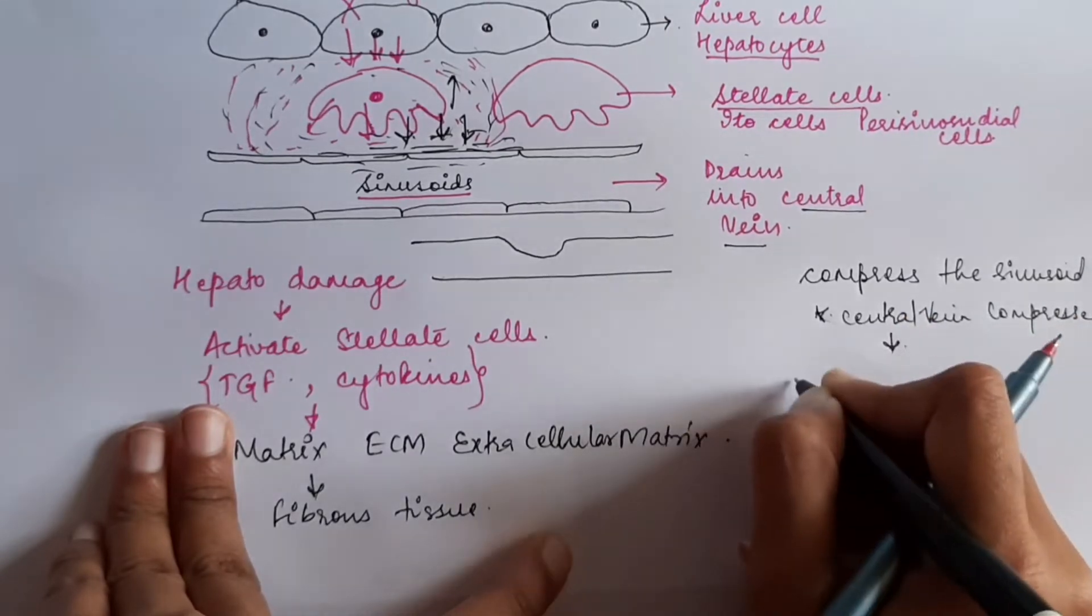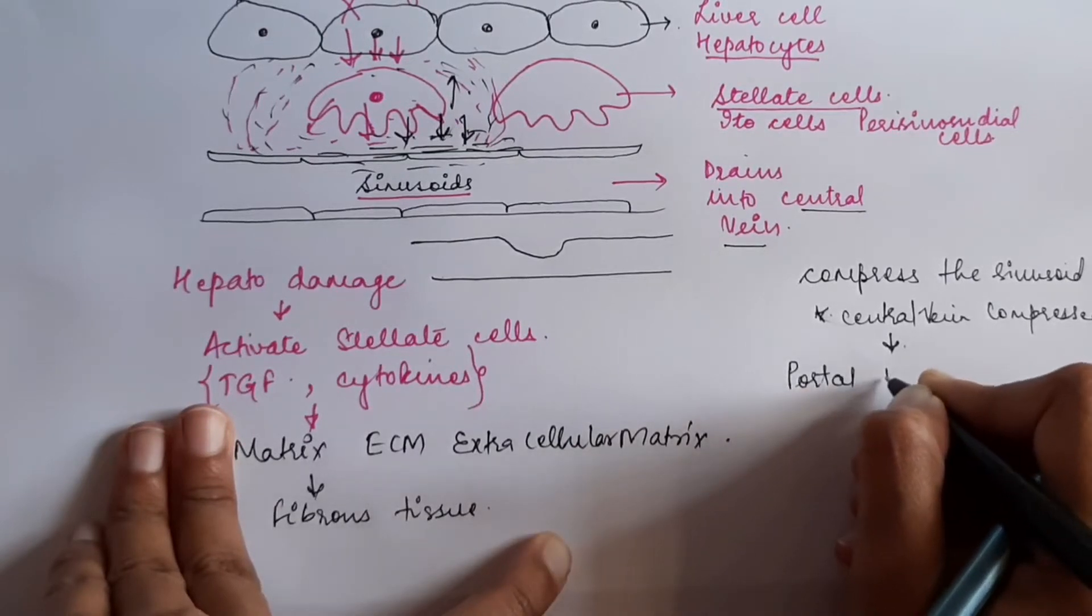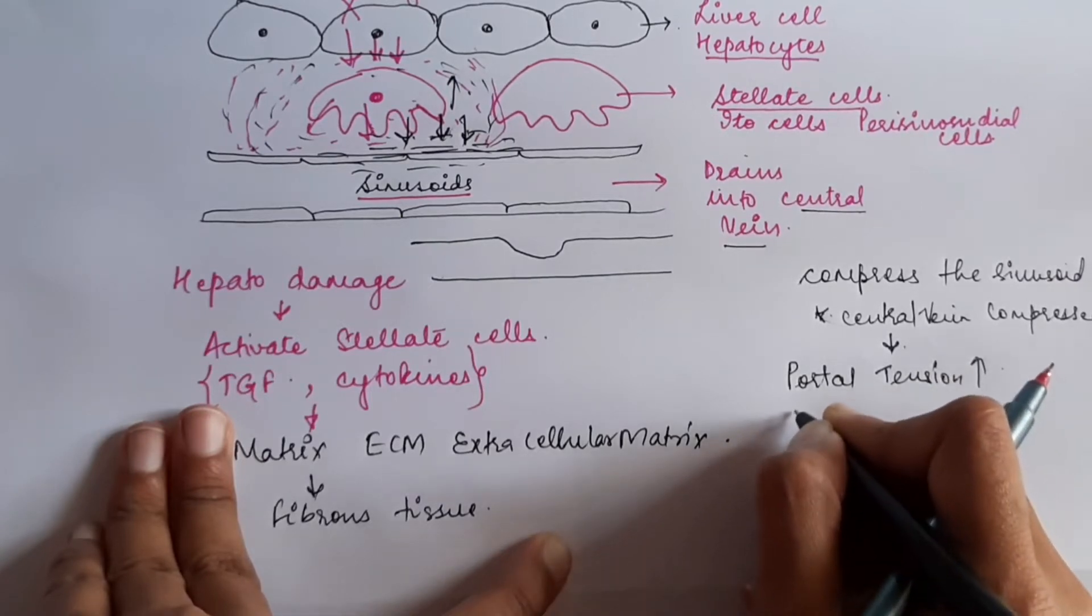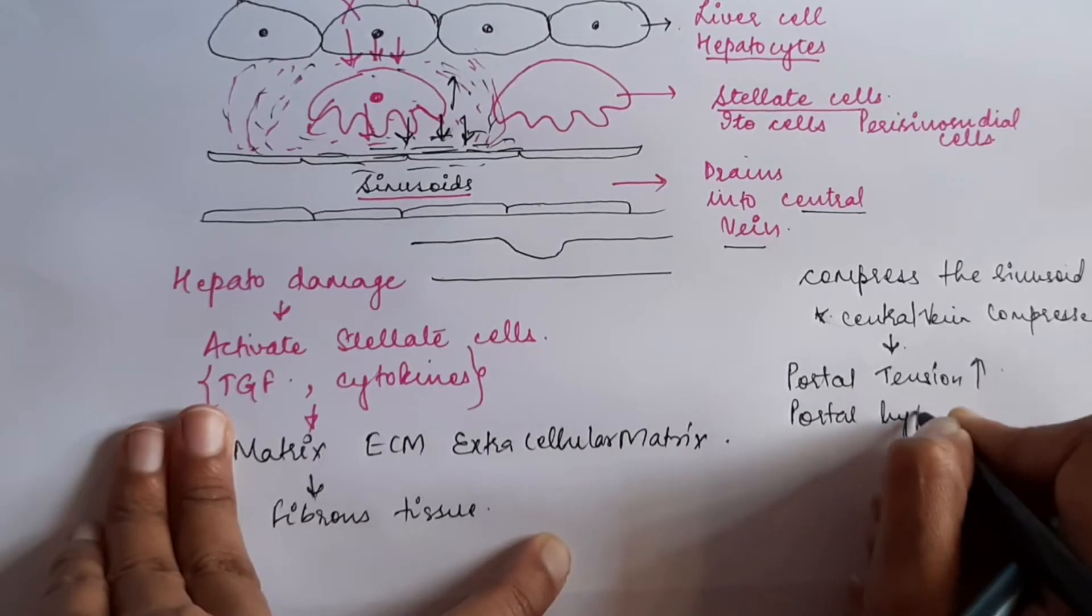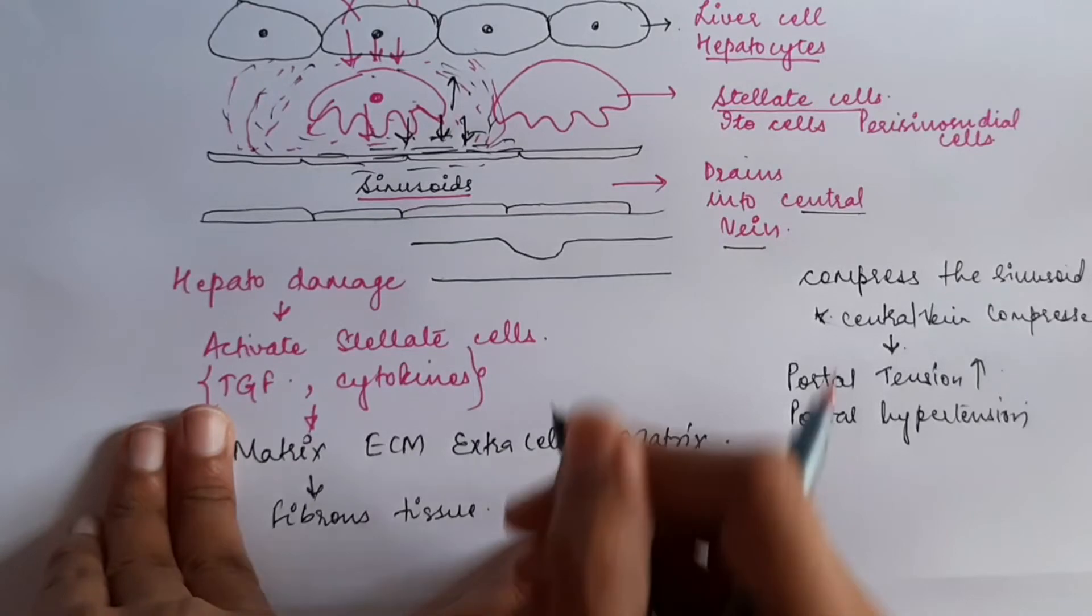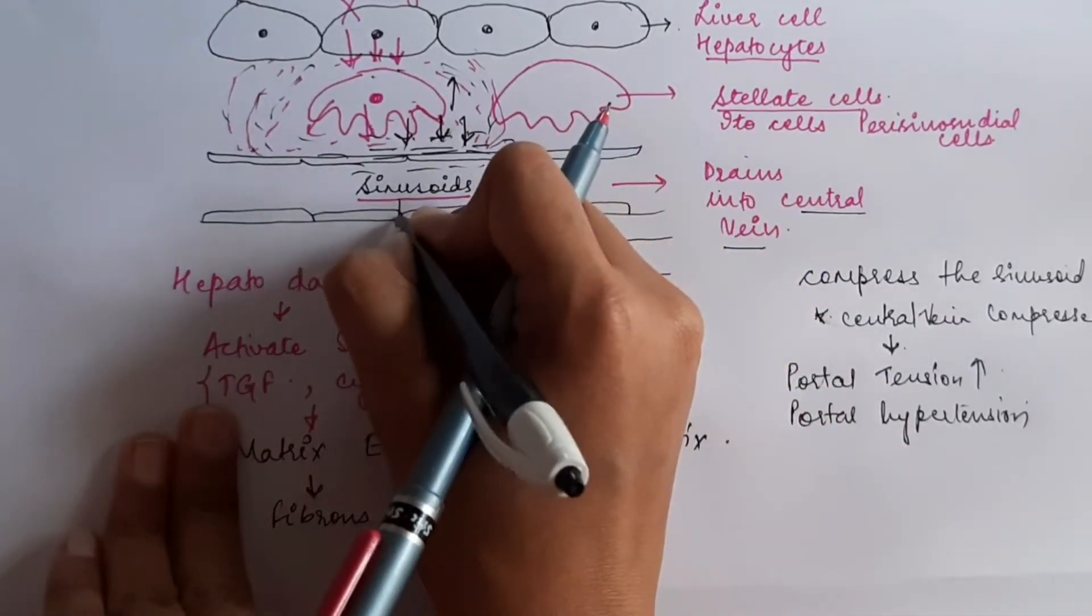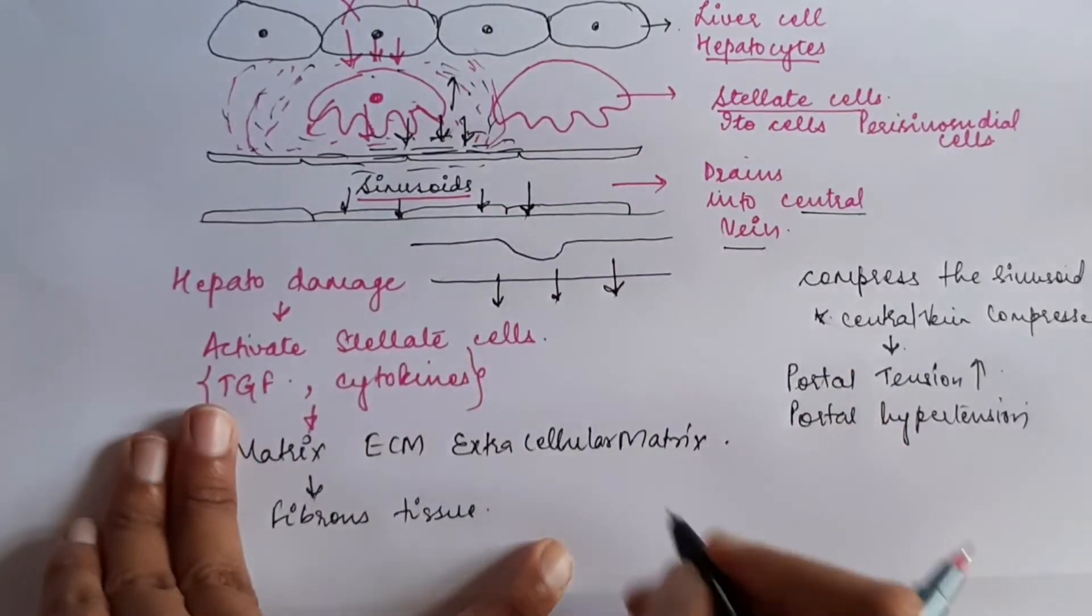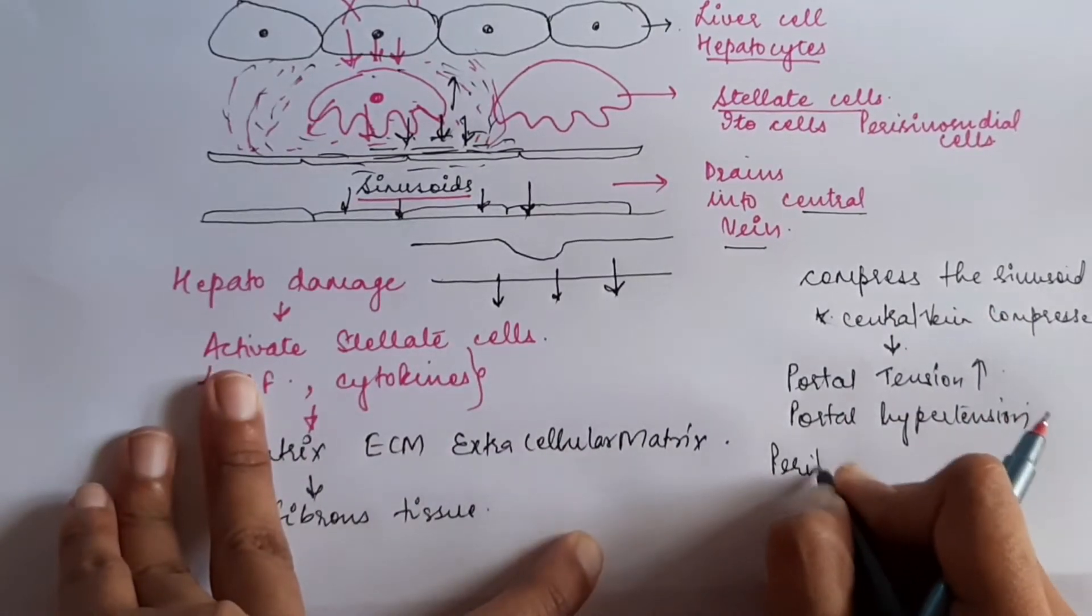Therefore, the portal tension will increase. That is known as portal hypertension. This will further pressurize the underlying layer and the fluid will escape out into the peritoneal cavity.